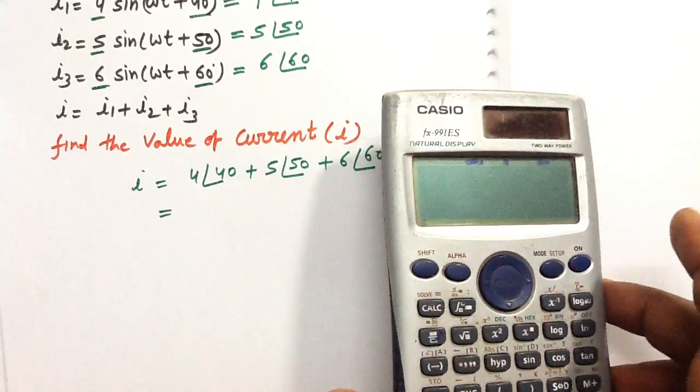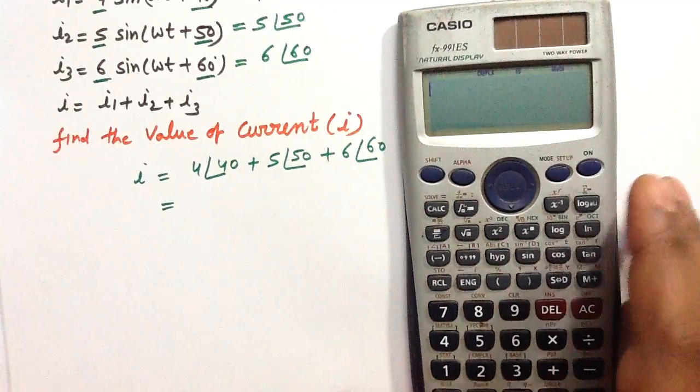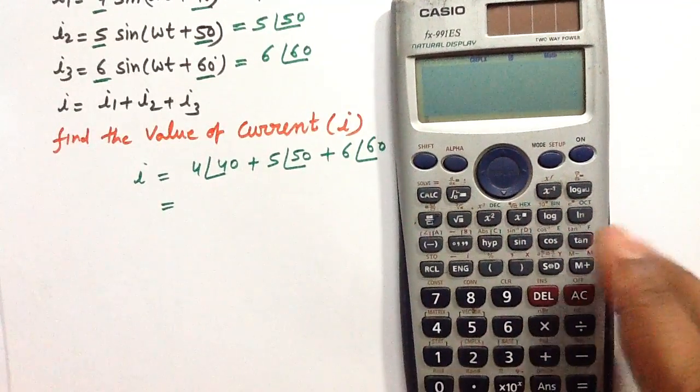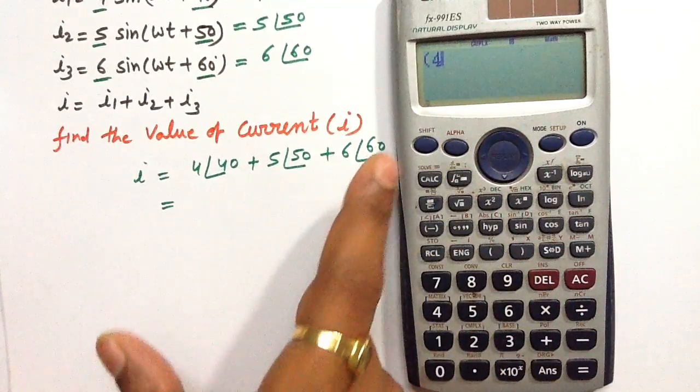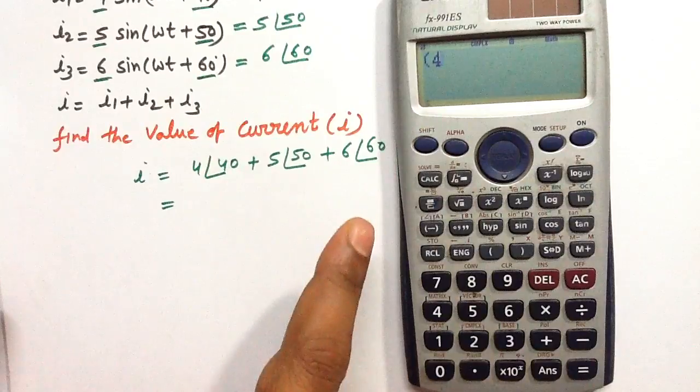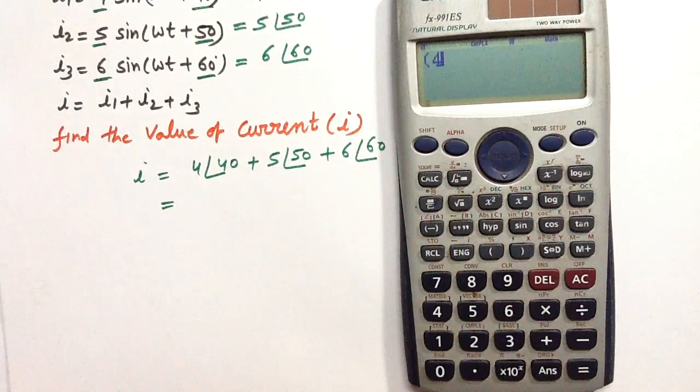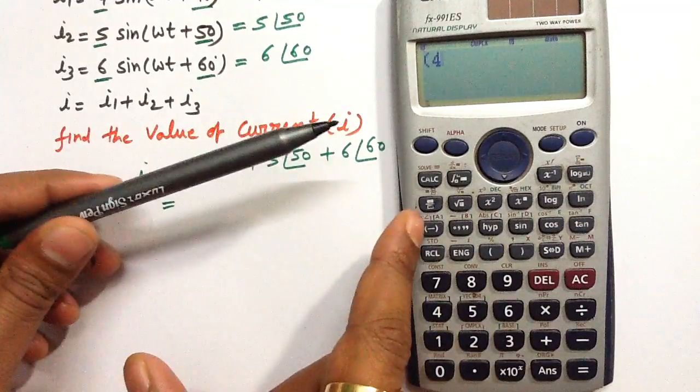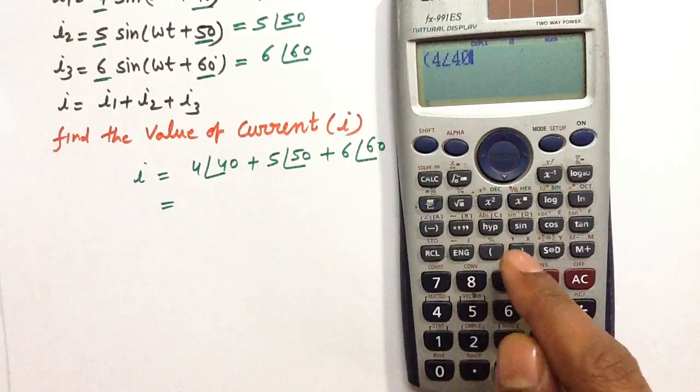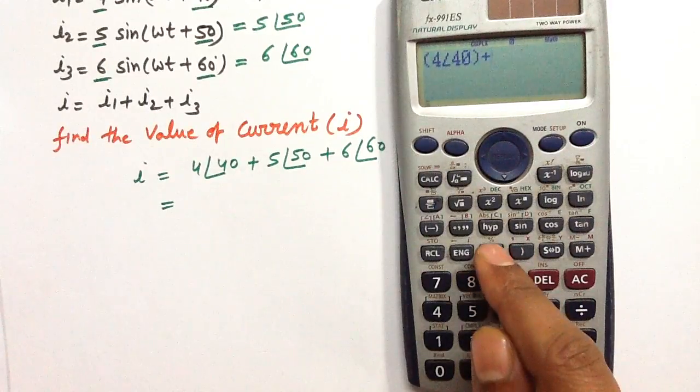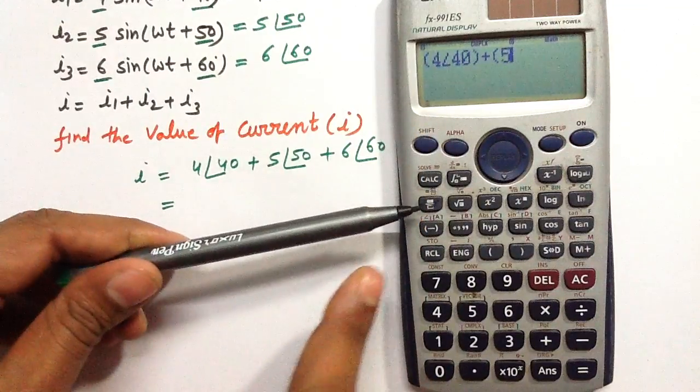Write bracket 4. To enter the angle, press Shift and then this button. Write 40, then plus 5, then press Shift and this button again.